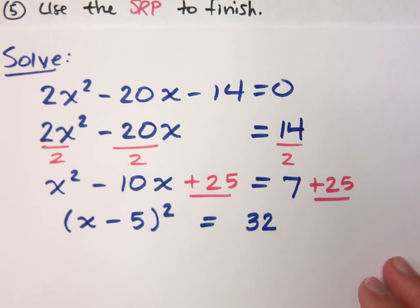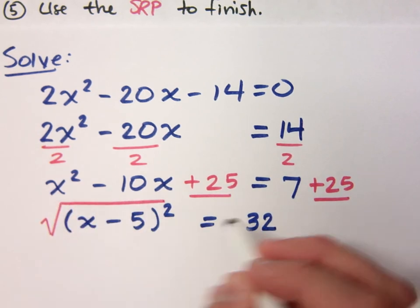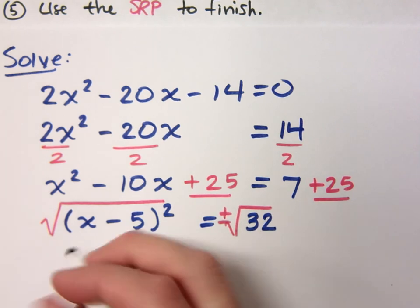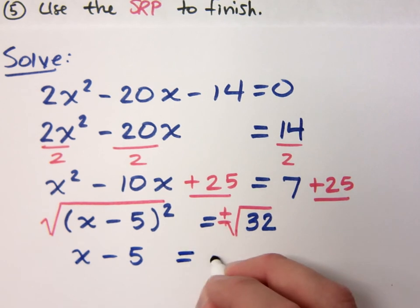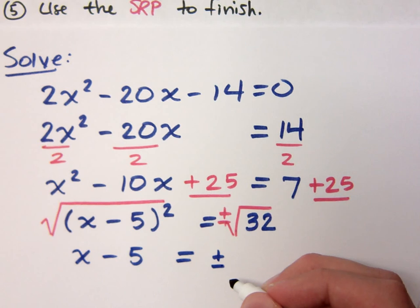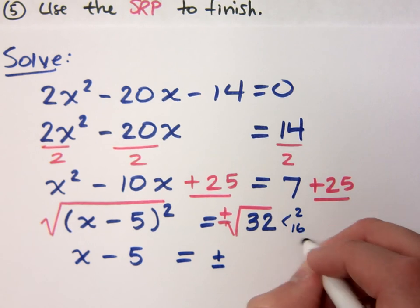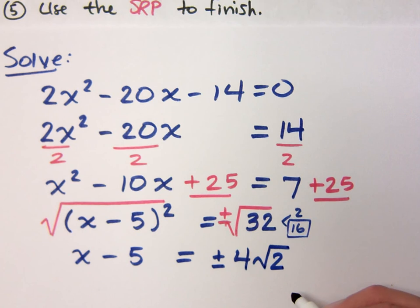Now I'm going to use the square root property to finish, which means square root both sides: x minus 5 equals plus or minus the square root of 32. What do I do with 32? I could do 2 square roots of 8, but even better is to say 2 times 16, because 16 is my perfect square. I get 4 on the outside, and 2 stays inside, because the square root of 8 would reduce further.